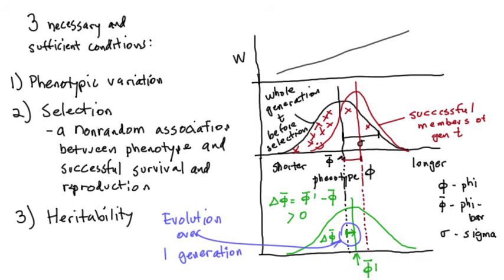Darwin published On the Origin of Species in 1858, detailing this basic mechanism and supporting it with a mountain of strong arguments, including analogies with artificial selection known well to animal and plant breeders. As expected, there was considerable backlash from established religion — and there still remains backlash today, though none of modern-day creationism has any scientific merit. During Darwin's day, however, there was a serious issue with the potential to invalidate his model, having everything to do with the first condition — phenotypic variation — and the last: heritability.